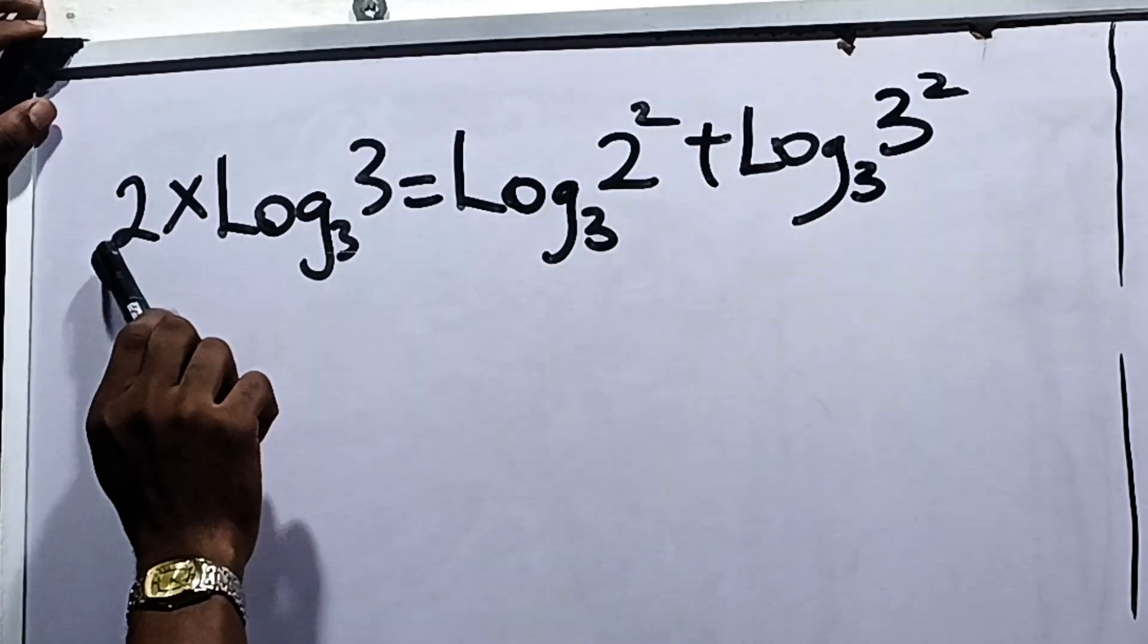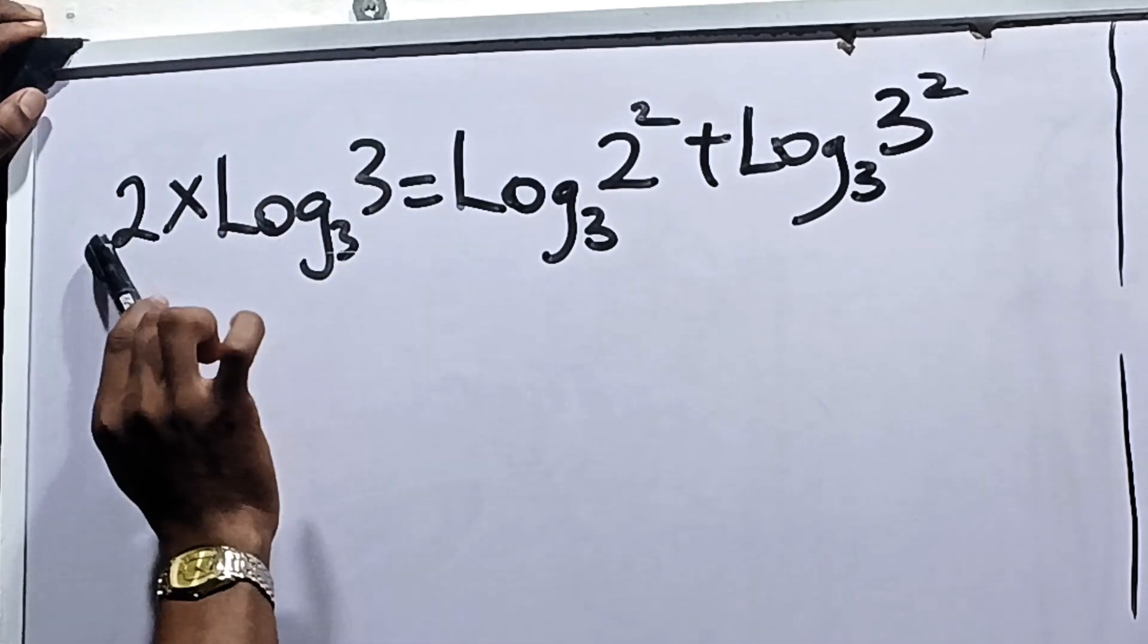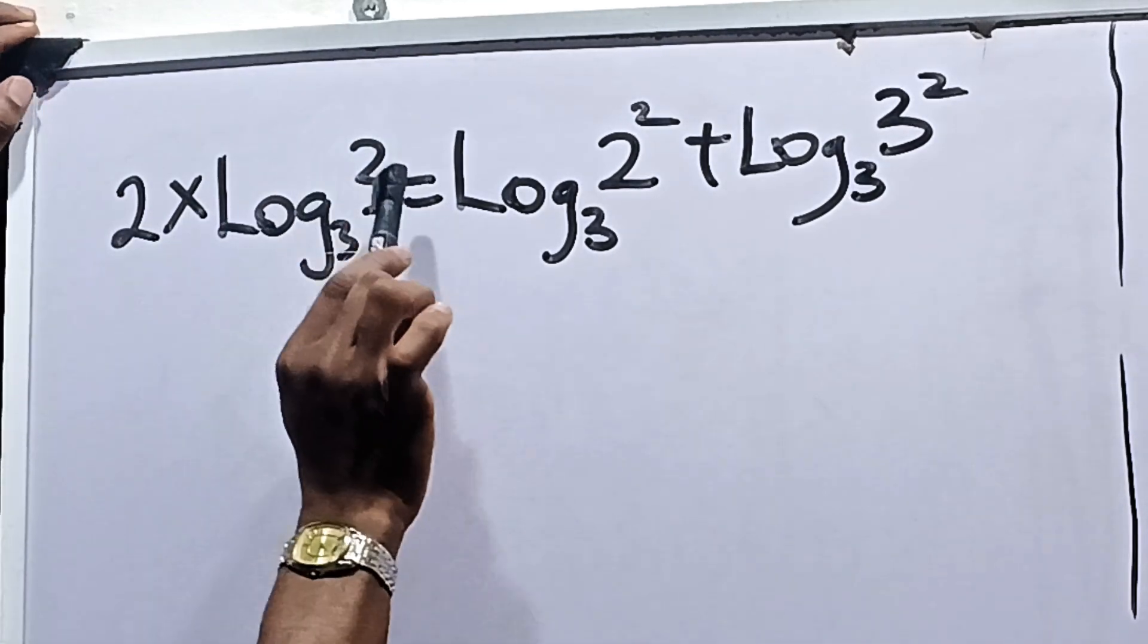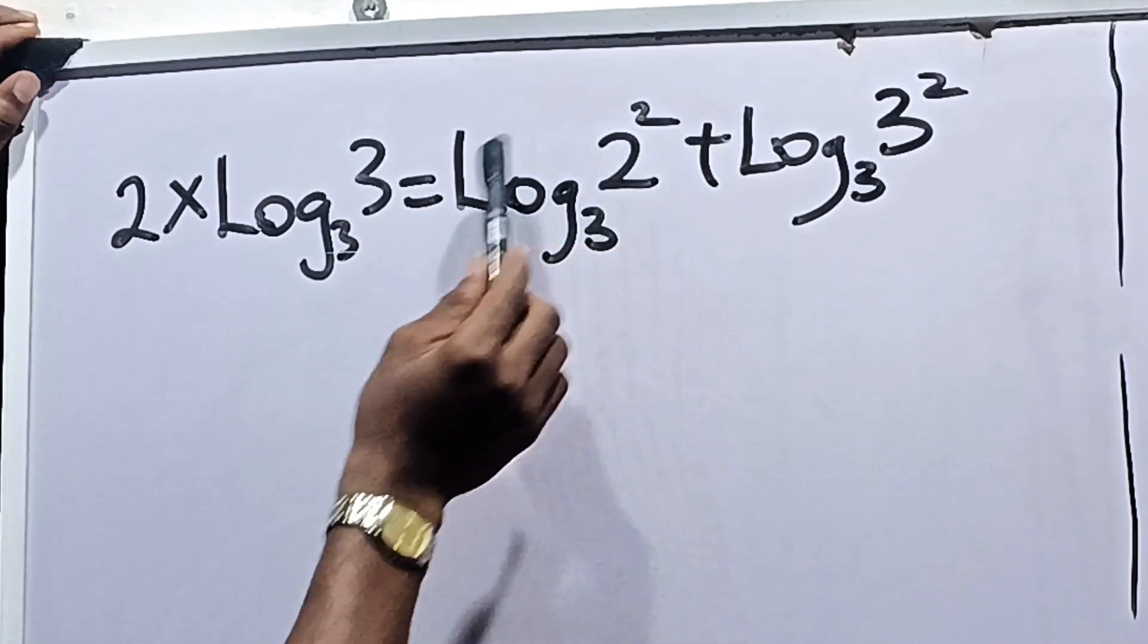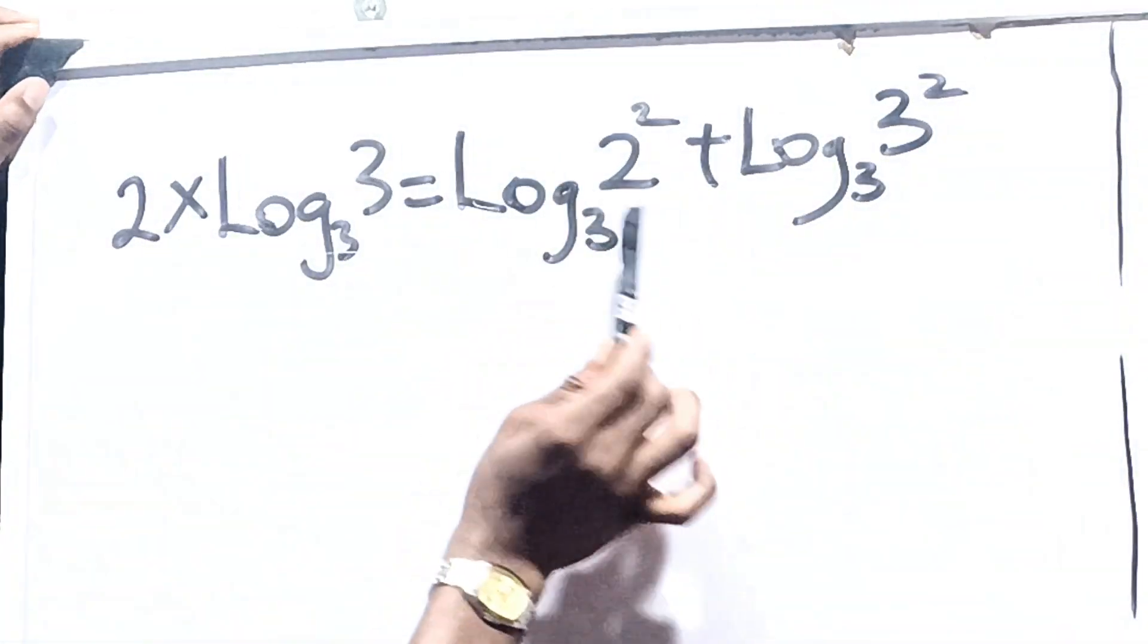2x now multiplies this log. So we have 2x times logarithm of 3 base 3. On this other side, you split this up and put plus between them.